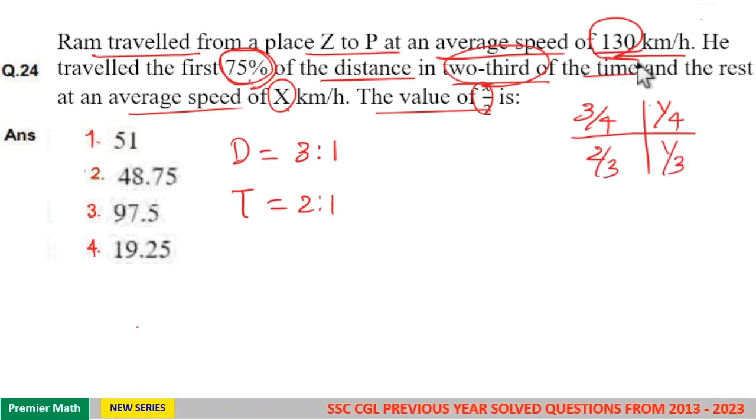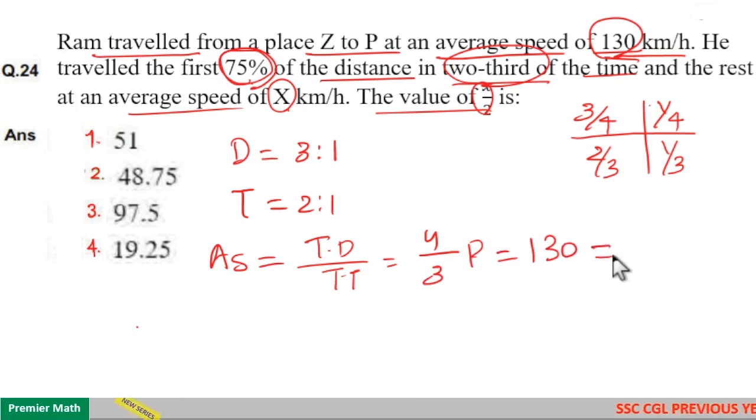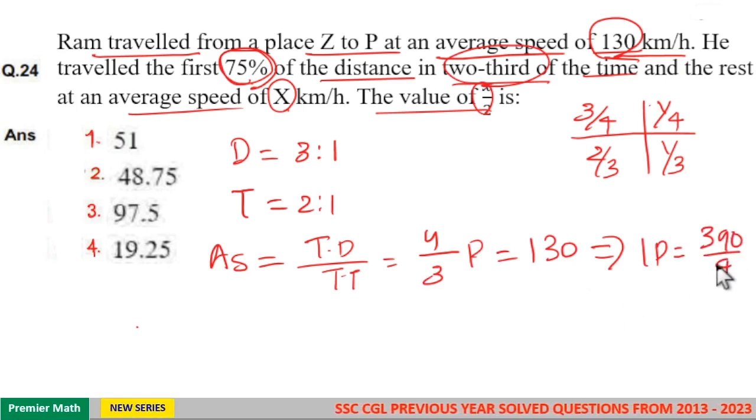Now here average speed is 130 km per hour. Average speed means total distance by total time which is equal to total distance four parts and total time three parts. So four by three parts is equal to 130 km per hour means one part is equal to 130 into 3, 390 divided by four parts.